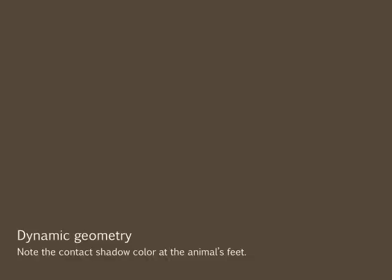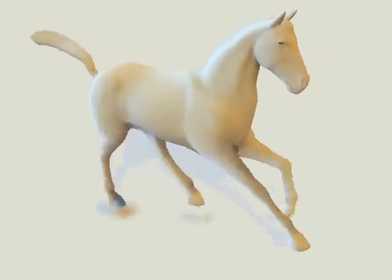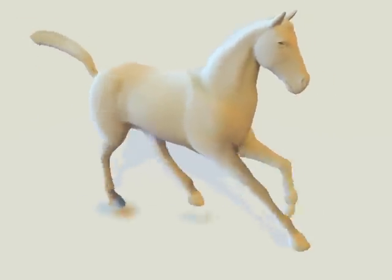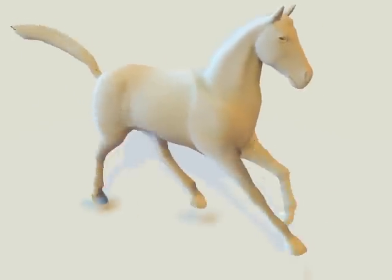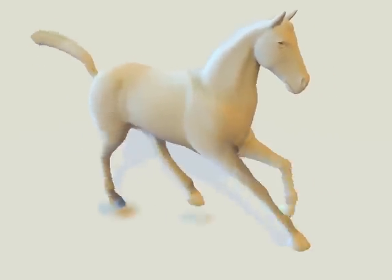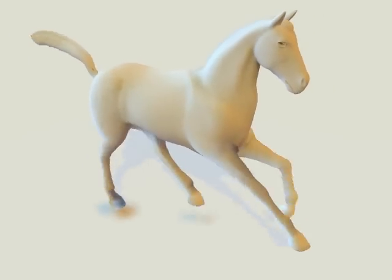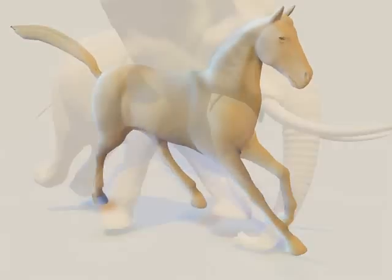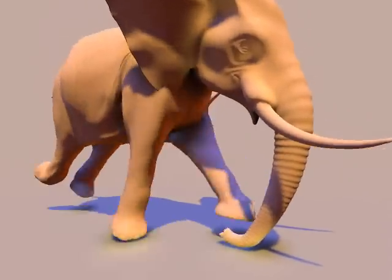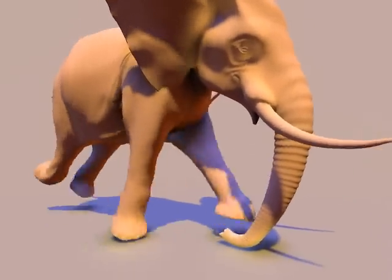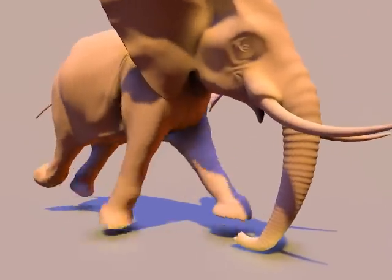Dynamic geometry as in character animation is naturally supported too. The directional occlusion results in colored contact shadows for the horse, or indirect light bouncing from the elephant's feet, as seen on the ground plane in this last example.